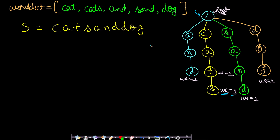We can build a Trie by inserting cat, cats, and, sand, and dog. I use a word_end value — wherever it's not mentioned, it defaults to zero. Word_end indicates if a word ends at a given node, and the count tells how many words end at that node. For example, word_end equals 1 at 't' (the t in cat) means 'cat' ends there. If you don't know how to implement a Trie, watch my video on it.